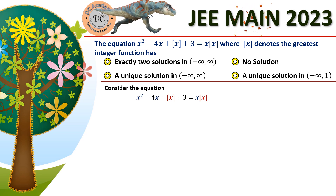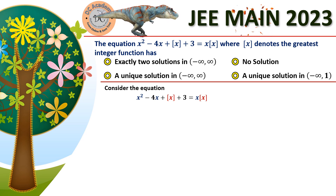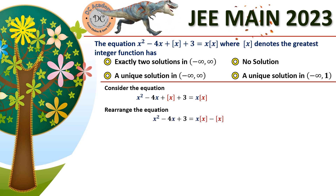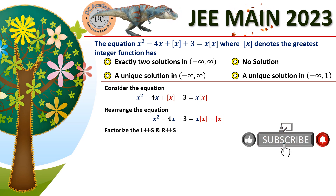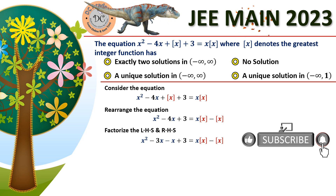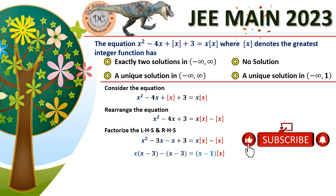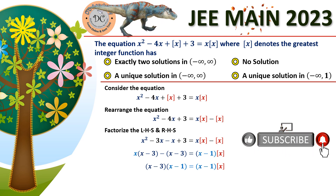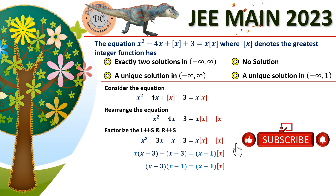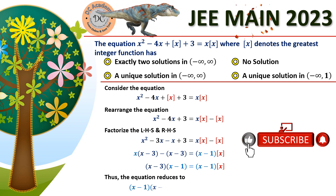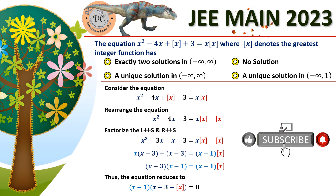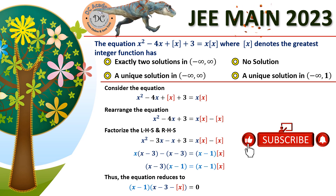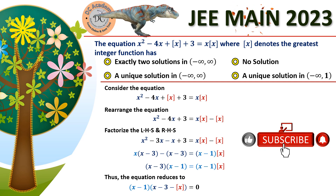We rearrange the given equation so that all the greatest integer function terms are on one side. Taking everything to the right-hand side and applying middle-term factorization on the left-hand side, we get (x minus 1)(x minus 3) minus box(x). So the given equation reduces to (x minus 1) multiplied by (x minus 3 minus box(x)) equals zero.